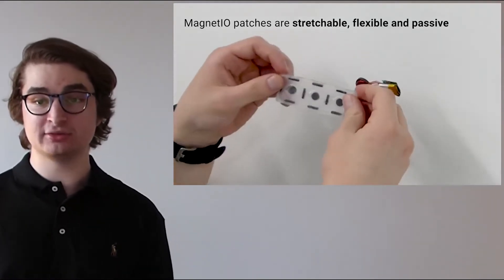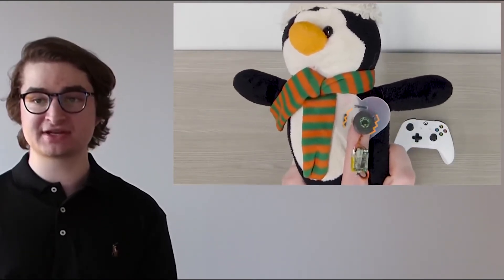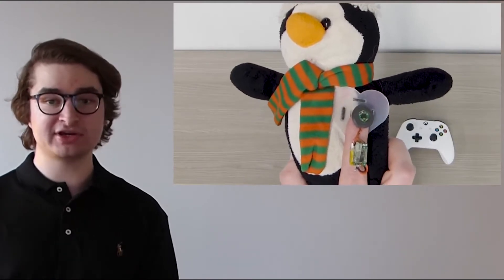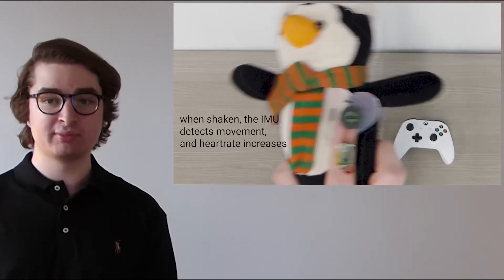Next, the user picks up their toy, which has a heart-shaped patch on its chest. They can feel its heartbeat with MagnetIO. When the toy is shaken, the onboard IMU detects the movement and the heart rate and vibration speed up accordingly, before slowing down again after no movement is detected.